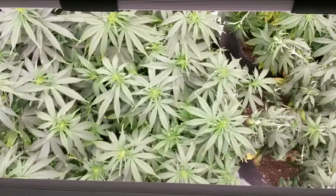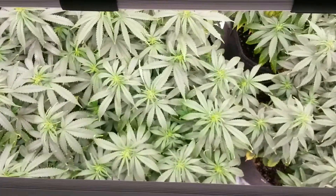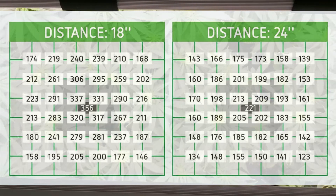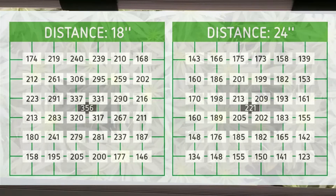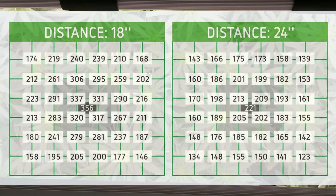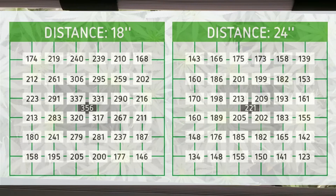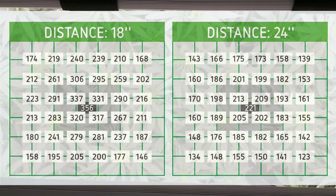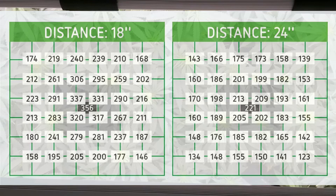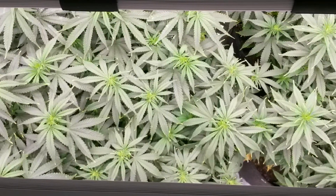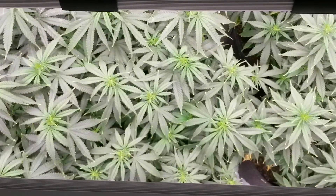So yeah, the next time you're looking to purchase a grow light, be sure to check their PAR maps to see both what light will work best in your grow space and at what height it should be hung at in relation to your plant's canopy. And that's it.